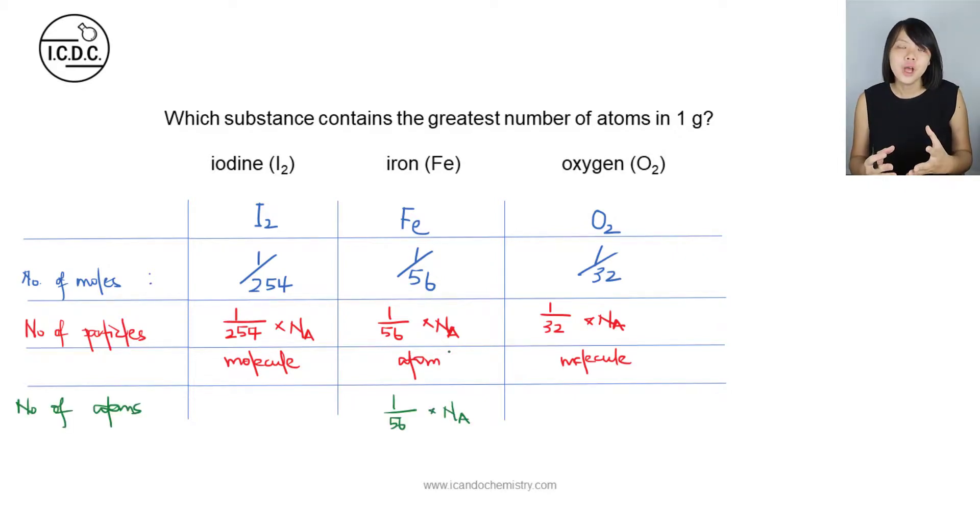But what about those that are molecules? Now for iodine, we know that in one iodine molecule, there are two atoms. If we have this number of iodine molecules, then we will just simply need to multiply by 2, which gives me 2 over 254 multiplied by Avogadro's number, which is 1 over 127 multiplied by the Avogadro's number.